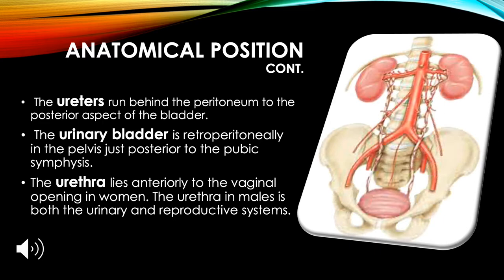The ureters run behind the peritoneum to the posterior aspect of the bladder. The urinary bladder is retroperitoneally in the pelvis, just posterior to the pubic symphysis. The urethra lies anteriorly to the vaginal opening in women. In males, the urethra serves both the urinary and reproductive systems.